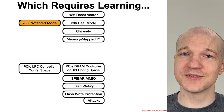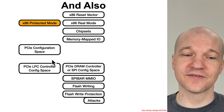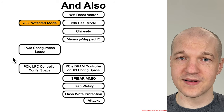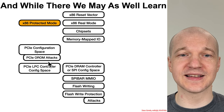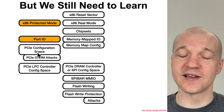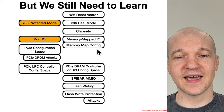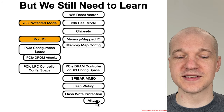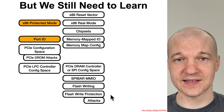To understand those, you need to understand chipsets and memory mapped IO, as well as PCI configuration address space. While on that topic, we may as well learn about another type of attack: PCI option ROM attacks. You also have to learn about port IO and memory mapped IO to really understand how PCI config address space is accessed and how the system sets up the overall memory map. All of this information is necessary to make our way to the flash write protection and the attacks thereupon.